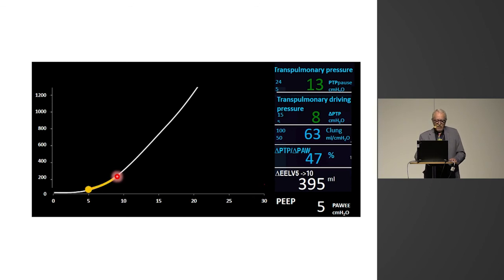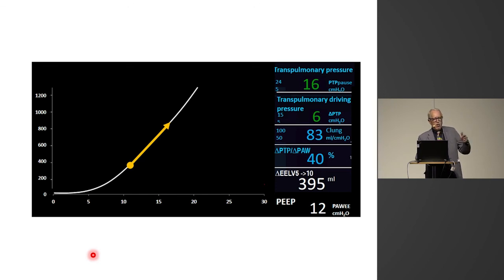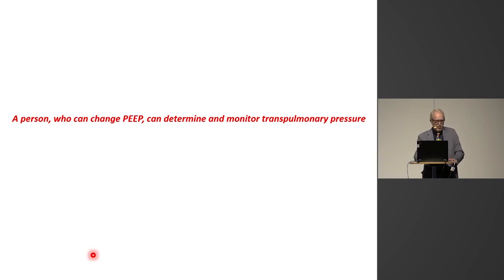So if we have 5 in PEEP, this is the tidal inspiration of about 500 milliliters. If we change to 12 in PEEP, this tidal curve will move up on the lung PV curve. This means that after this short procedure, we can predict what happens when you change tidal volume or PEEP in a patient. This procedure is so easy that any person who can change PEEP can determine and monitor transpulmonary pressure.